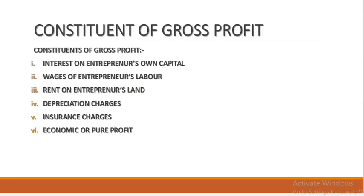What are the elements of gross profit? They include: interest on the entrepreneur's own capital, wages of the entrepreneur's own labor, rent on the entrepreneur's own land, depreciation charges, insurance charges, and the pure profit.